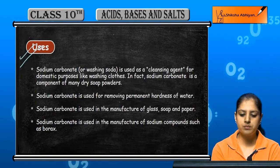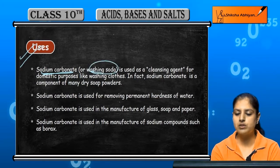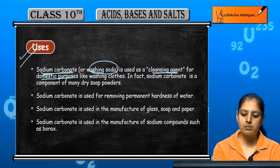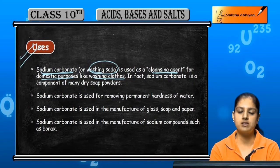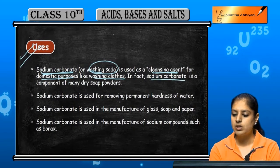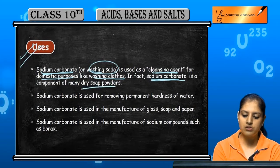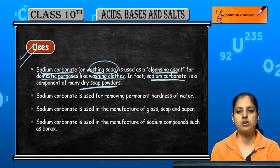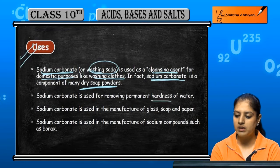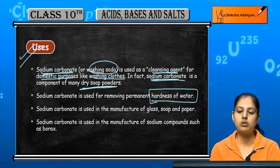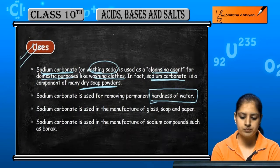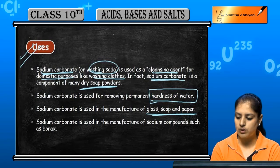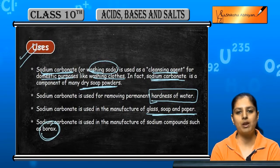Na2CO3 and 10 molecules of water combine to form washing soda. Sodium carbonate is used as a cleansing agent for domestic purposes like washing clothes. It is a component of many dry soap powders. It is used to remove the permanent hardness of water. It is also used in the manufacture of glass, soap, paper, and compounds such as borax.